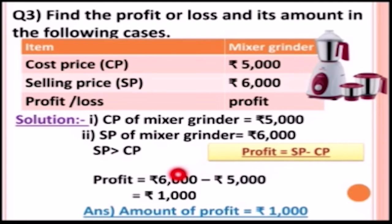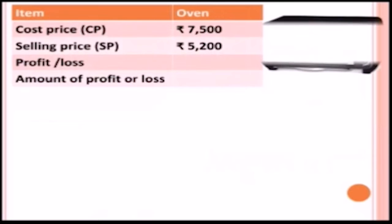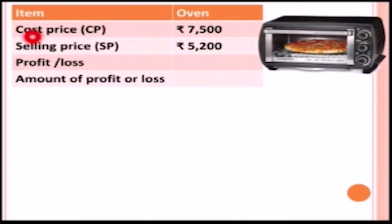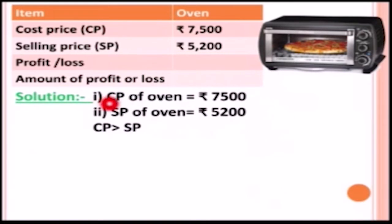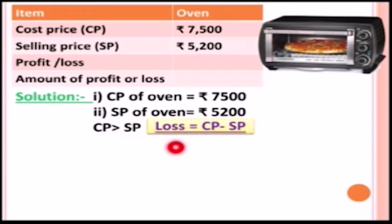Next, another item is given: oven. The cost price of the oven is rupees seven thousand five hundred and the selling price is rupees five thousand two hundred. We can clearly see that the cost price is greater than the selling price, so there is a loss. Loss equals CP minus SP.